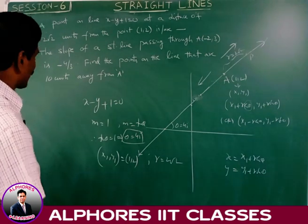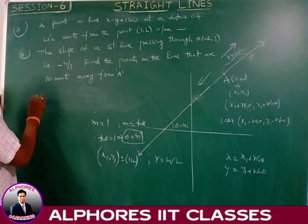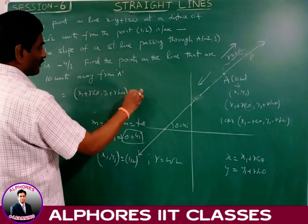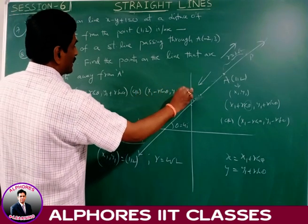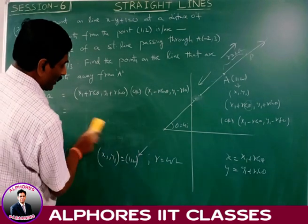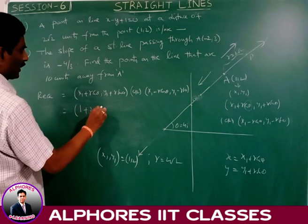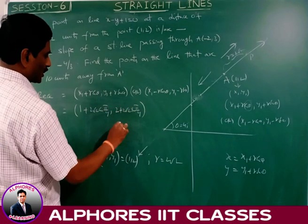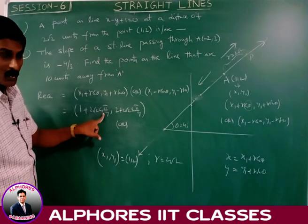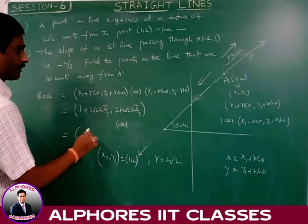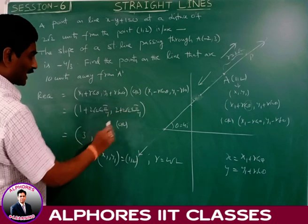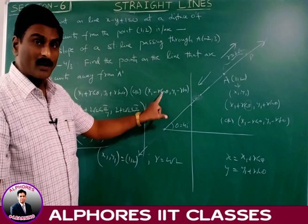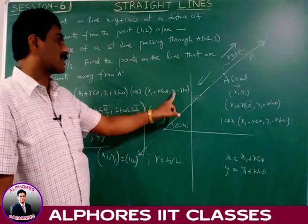The two required points are (x1 ± R·cos θ, y1 ± R·sin θ). Here cos(π/4) equals 1/√2 and 2√2 × (1/√2) equals 2. First point: (1+2, 2+2) equals (3, 4). Second point: (1−2, 2−2) equals (−1, 0). So the two points on the line at distance 2√2 from (1, 2) are (3, 4) and (−1, 0).